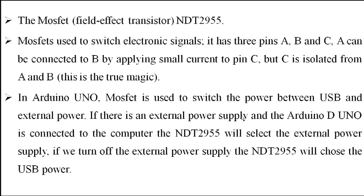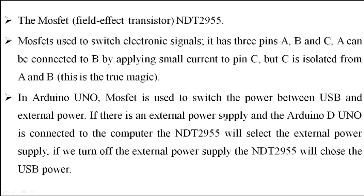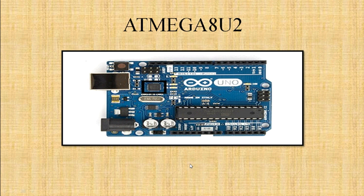The component inside this square is a MOSFET — a MOSFET transistor. MOSFETs are used to switch electronic signals. In Arduino, the MOSFET is used to switch power between USB and external power. If there is external power connected, the MOSFET will select the external power supply. If you turn off the external power supply, the MOSFET will switch to USB power.